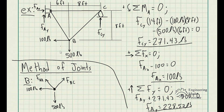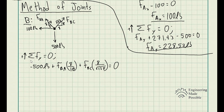We need the angles for the members. Using the given dimensions: member BA has a rise of 8 ft and a run of 6 ft, giving a hypotenuse of 10. Member BC has a rise of 8 ft and a run of 8 ft, giving a hypotenuse of √128. For the sum of forces in the y-direction (up positive): −500 + FBA × (8/10) + FBC × (8/√128) = 0.